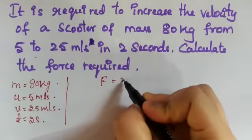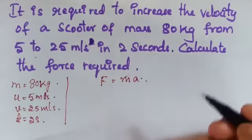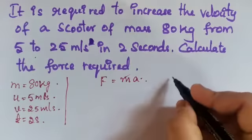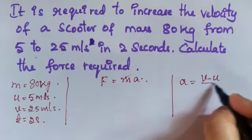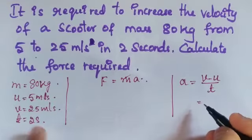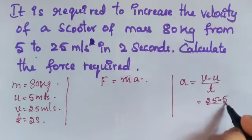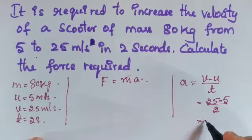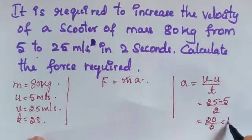The force formula is F equals M into A. Mass is given but acceleration is not given, so first we have to find out the acceleration. A equals V minus U divided by T, which is 25 minus 5 divided by 2 seconds.